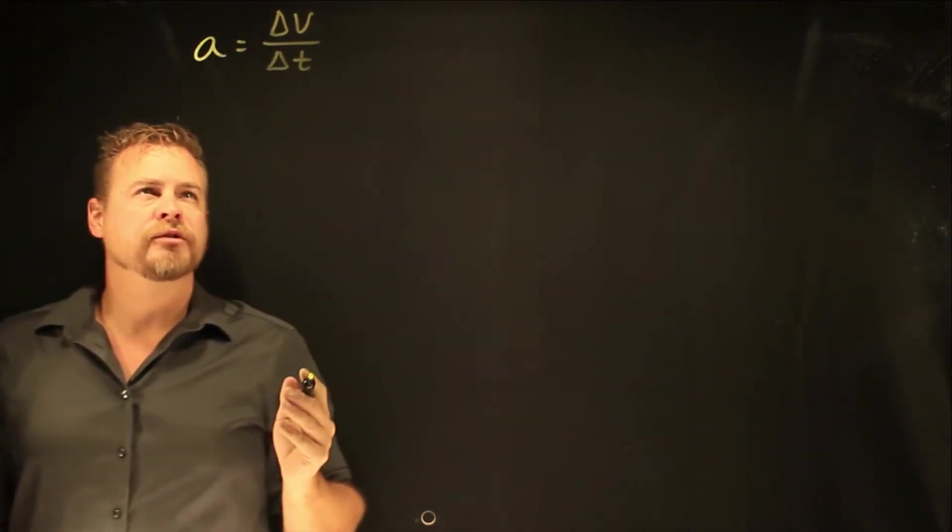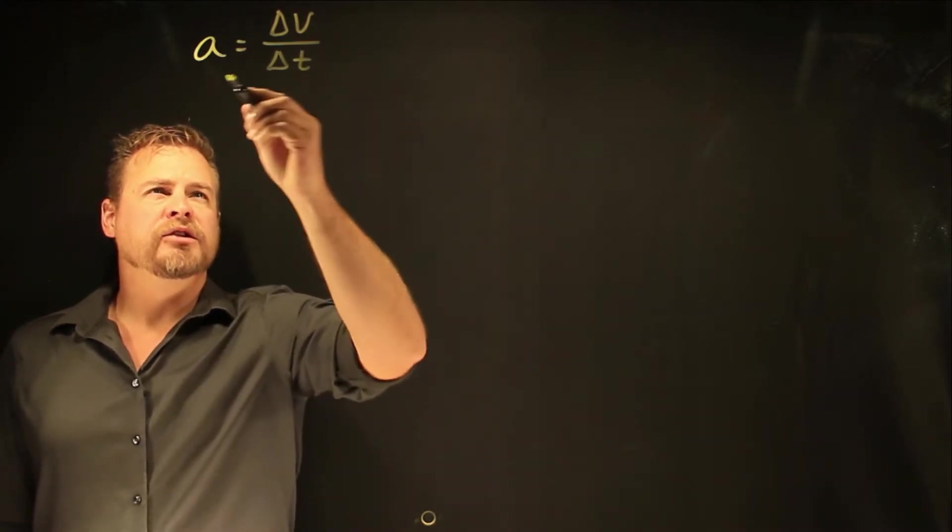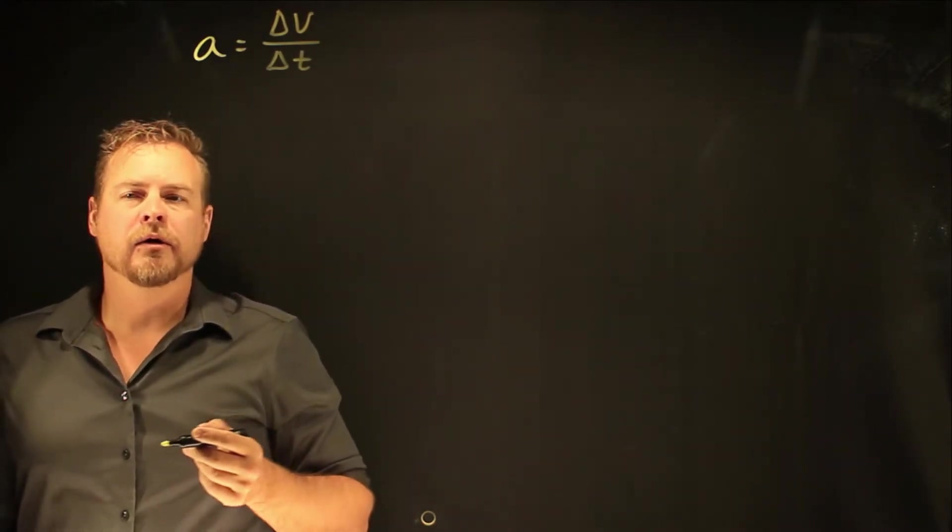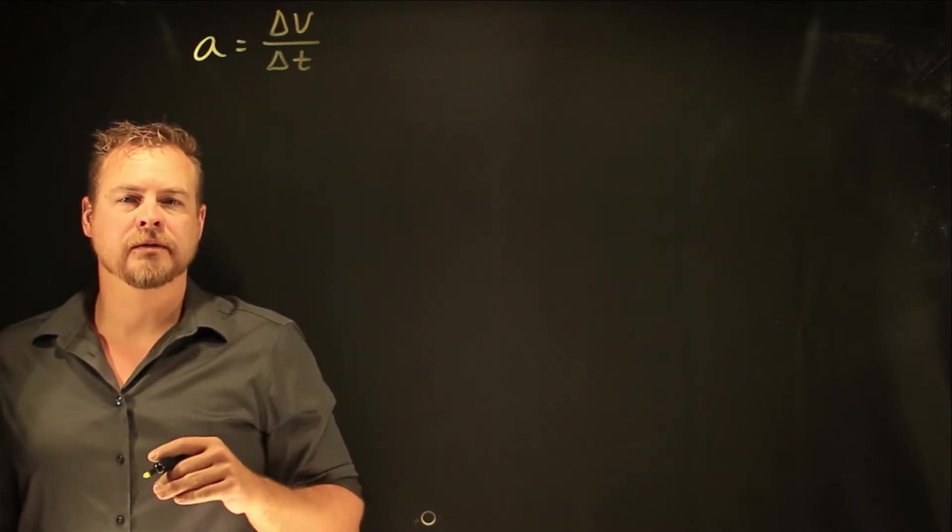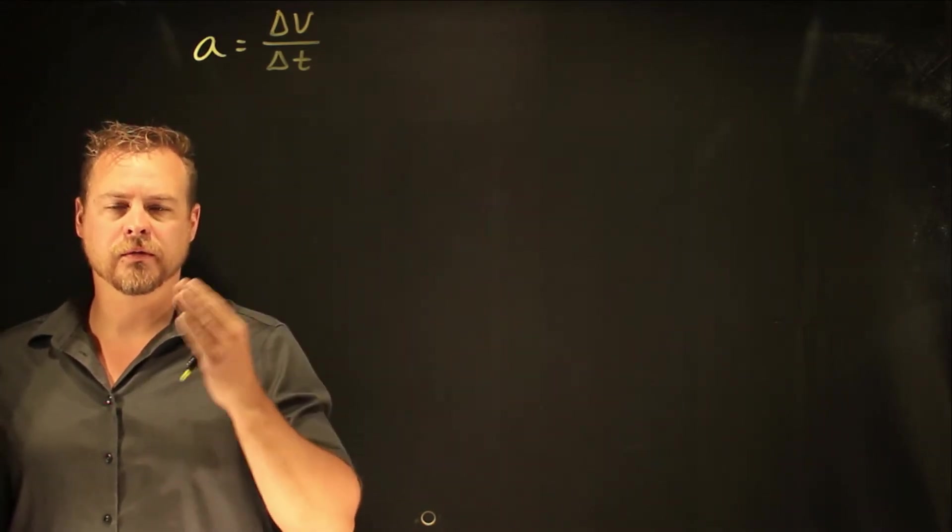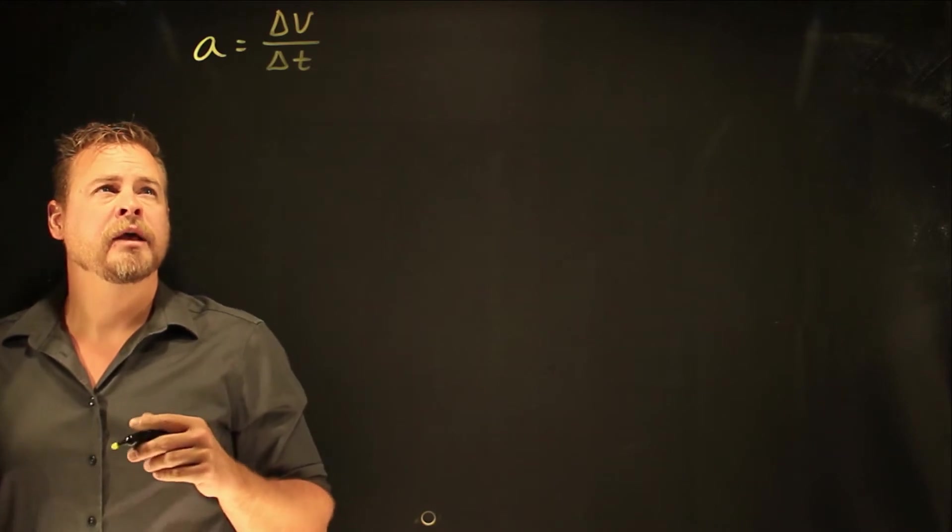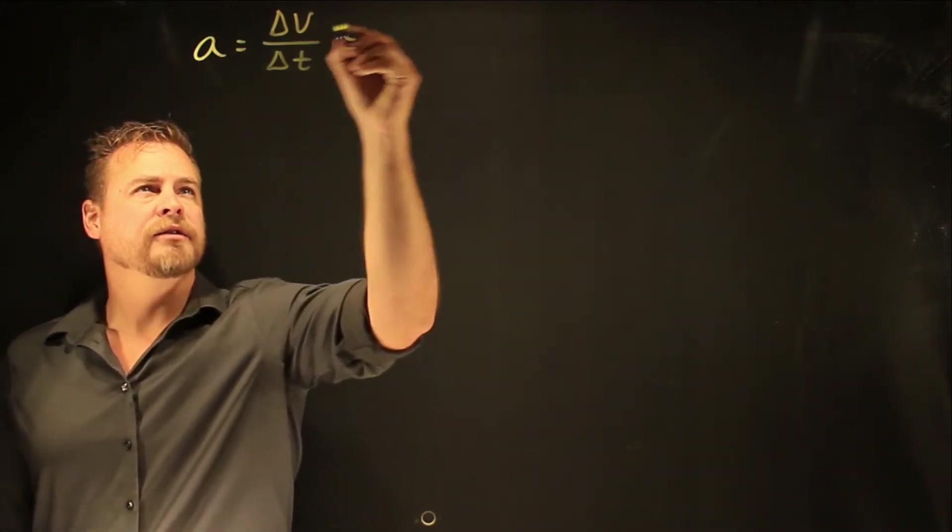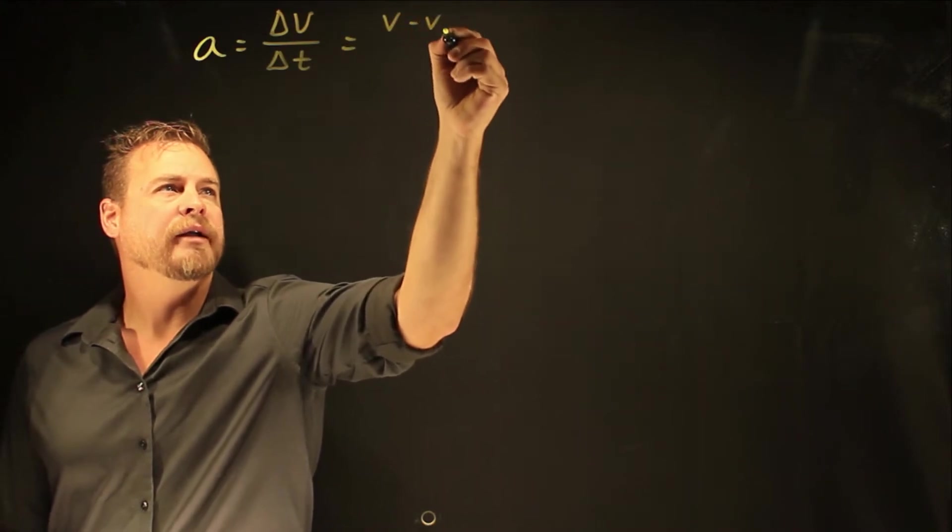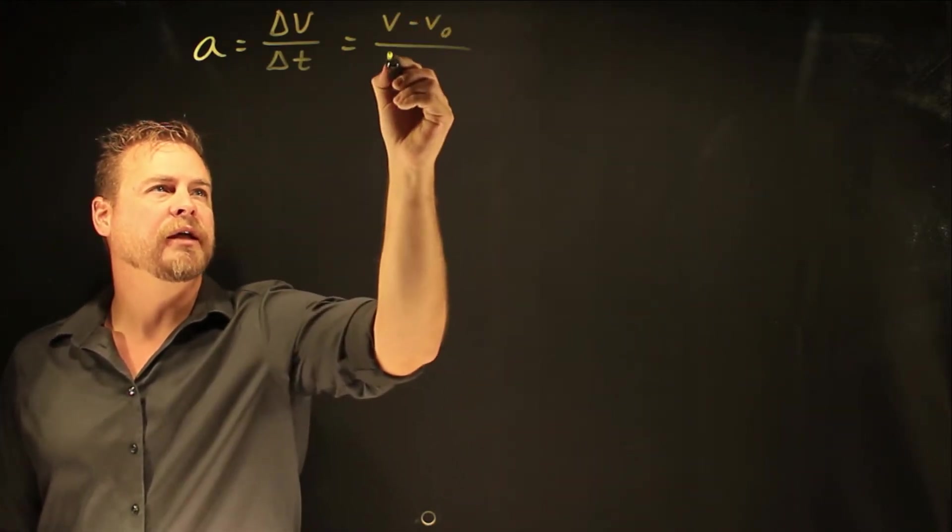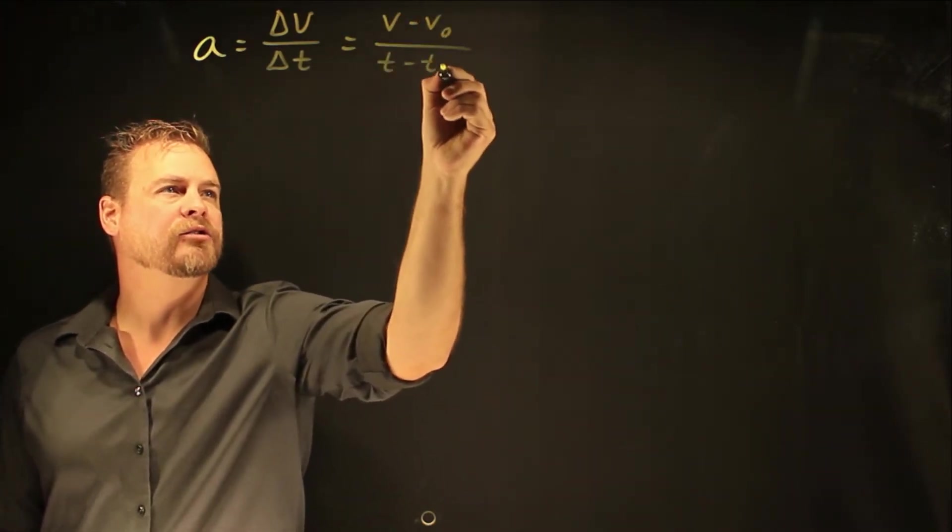Now just like with change in position, this doesn't express all of the things that I might want to know. I might want to know what was my starting velocity, what was my final velocity, how long did it take me to go from this velocity to that velocity. And so we're going to unpack this. The delta means change, and so I've got the final minus initial velocities and the final minus initial times.